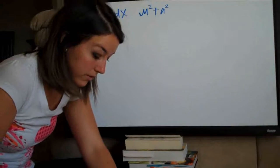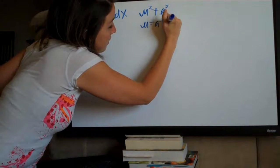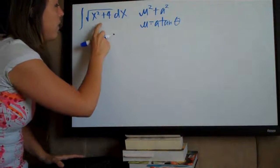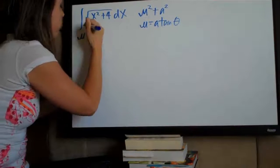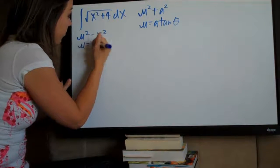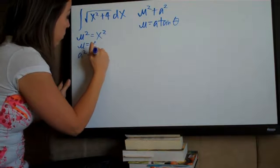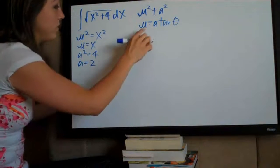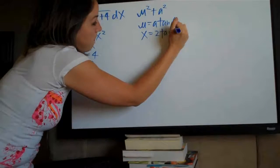When we see u squared plus a squared, we use the substitution u equals a times tangent of theta, so we need to identify u and a. In our case, we set u squared equal to x squared, take the square root of both sides and get u equals x. We set a squared equal to 4, take the square root and get a equals 2. Plugging those in, we end up with x equals 2 tangent theta.